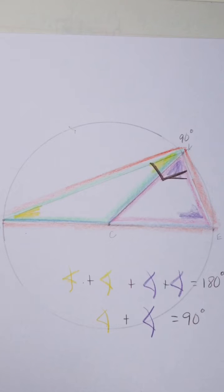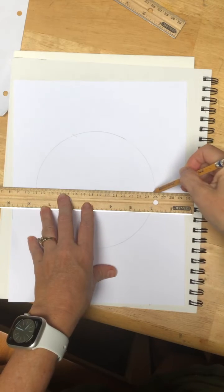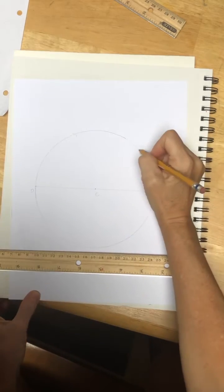Let's do a picture proof of one of Thales' theorems. We'll start by making the center and labeling it C, and drawing a circle from that center as well as the diameter.